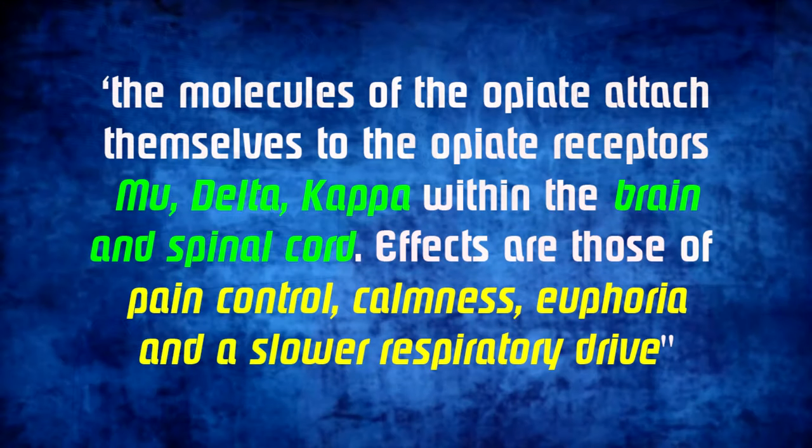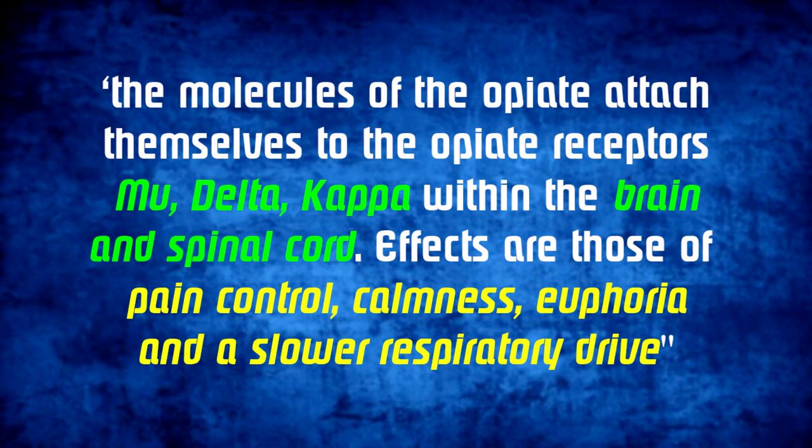naloxone interferes and inhibits the actions of opiates within the human body. When an individual takes an opiate, the molecules of the opiate attach themselves to the opiate receptors — mu, delta, and kappa — within the brain and spinal cord.